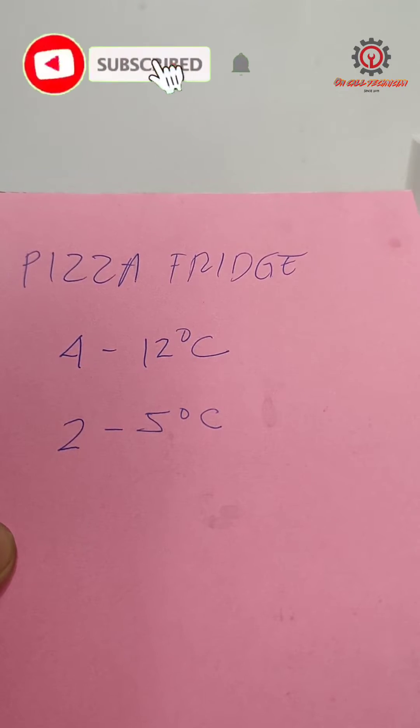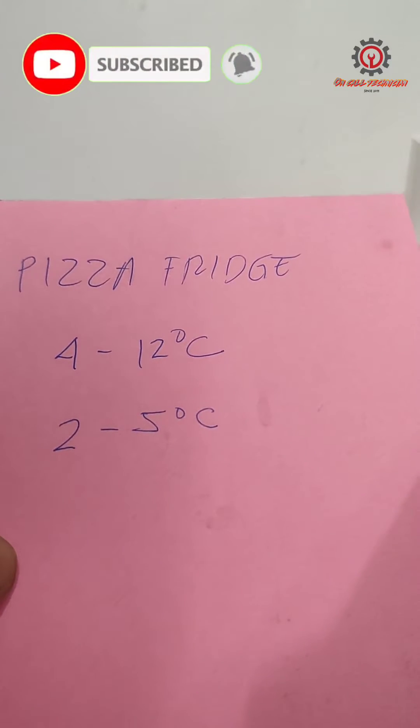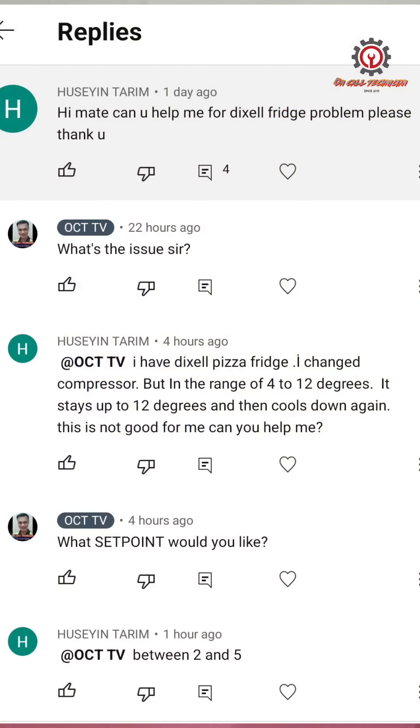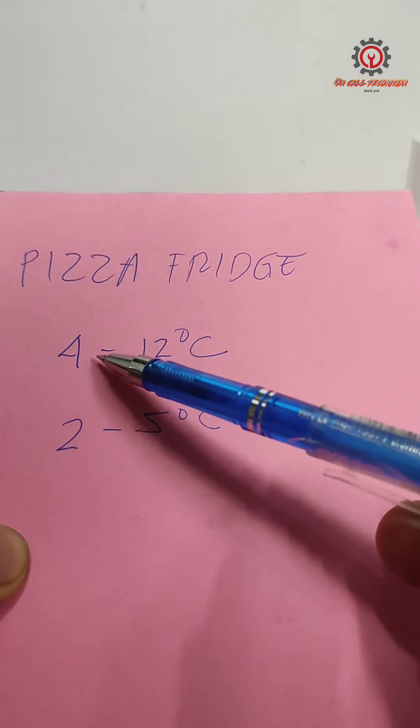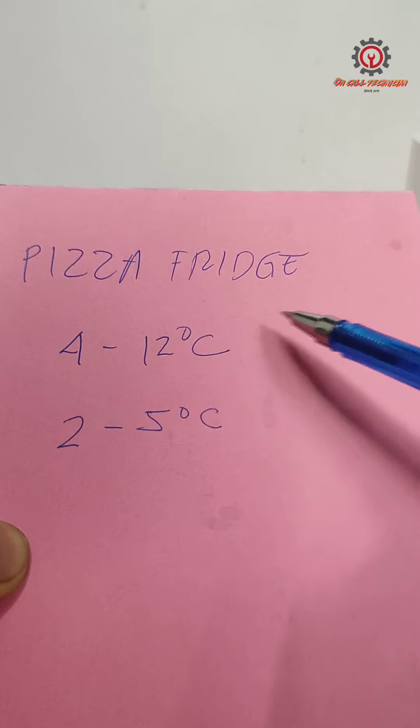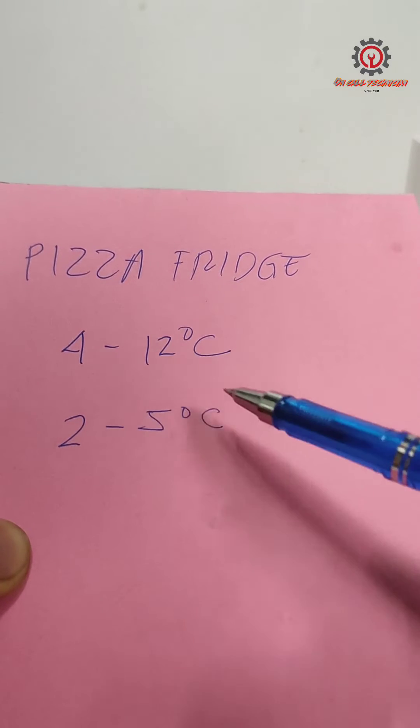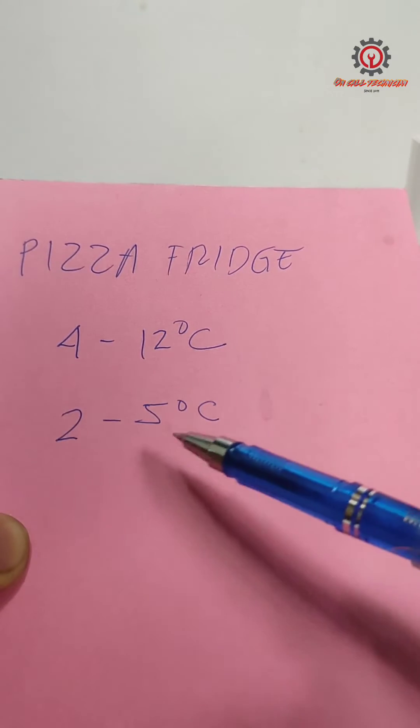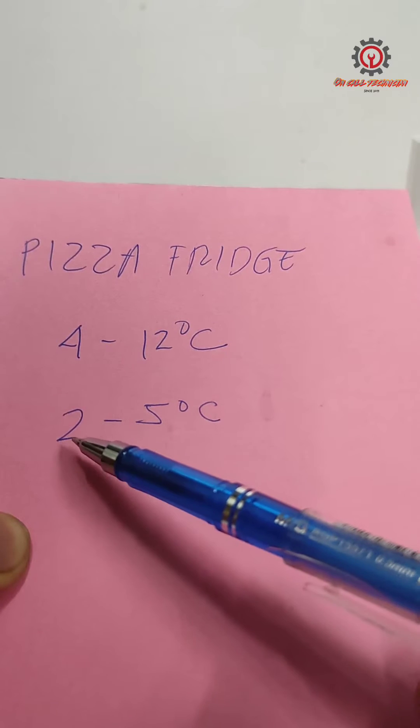Welcome guys. Today we're going to answer the request of Mr. Hussein Tarim. His problem is his pizza fridge ranges from 4 to 12 degrees Celsius. He changed the compressor, yet the setpoint he wanted is not being reached. He wanted it to be between 2 degrees Celsius to 5 degrees Celsius.